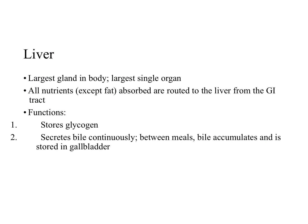The liver is the largest gland in the body and, after the skin, the largest single organ. Except for fat, all nutrients absorbed from the GI tract are initially sent to the liver by the hepatic portal system. The liver can then decide whether to store the nutrients or release them to the body. The liver also stores glycogen and secretes bile — a yellow, brown, or green fluid that aids in the emulsification or breakdown of fat.